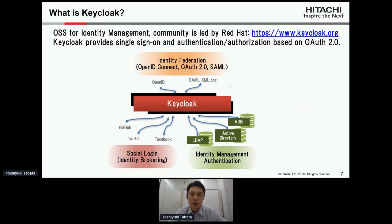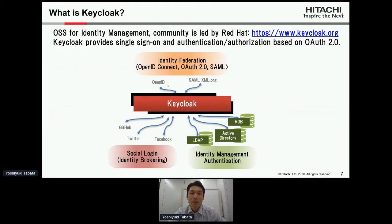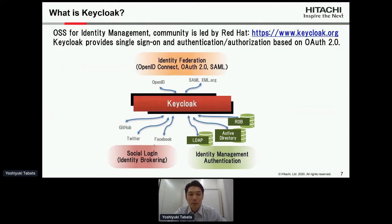Keycloak is an OSS for identity management and its community is led by Red Hat. Keycloak provides single sign-on, authentication, and authorization based on OAuth 2.0. There are three characteristic functions. First, identity federation: Keycloak federates identities based on OpenID Connect, OAuth 2.0, and SAML. Second, social login or identity brokering: Keycloak can delegate authentication to external identity providers such as GitHub, Twitter, Facebook, and so on.